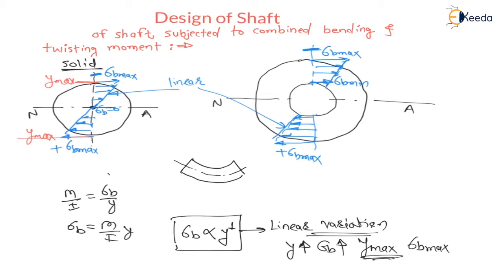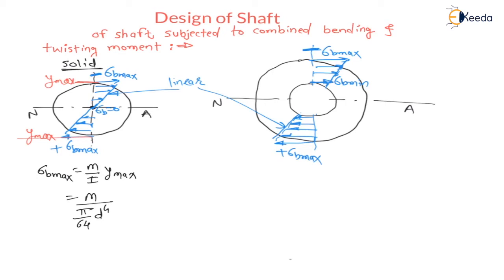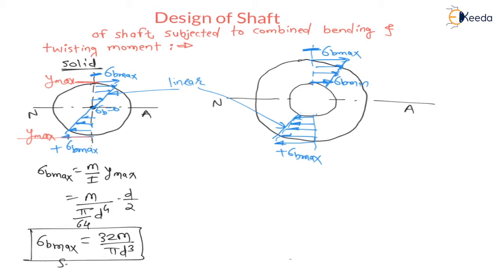The outer circumference is subjected to maximum bending stresses. For a solid shaft, the maximum bending stress is σB_max = 32M/(πd³). This formula is obtained by substituting I = πd⁴/64 and Y_max = d/2 into σB_max = M·Y_max/I.